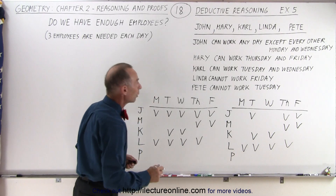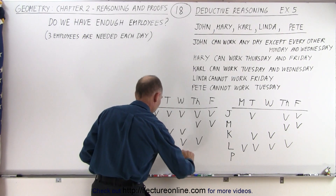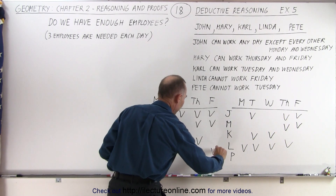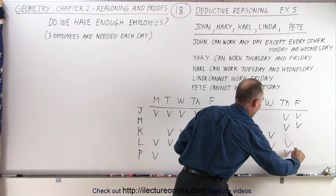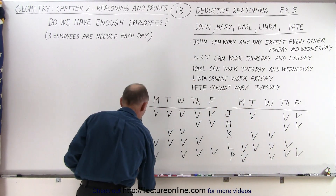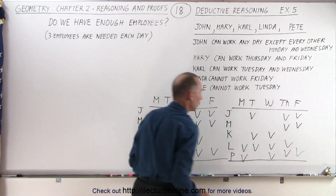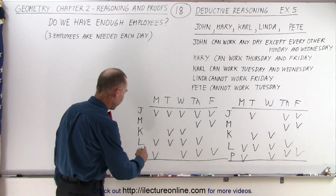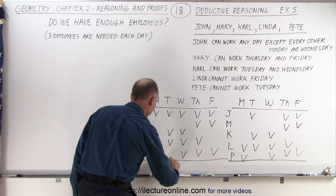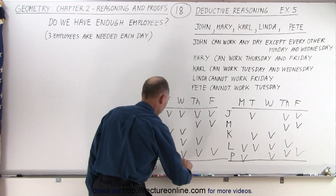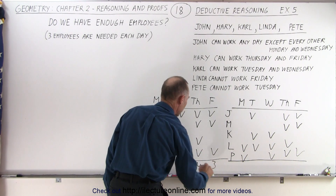Finally, Pete cannot work on Tuesday, so the other four days he can: Monday, Wednesday, Thursday, and Friday. Now let's add up how many employees we'll have on each day for those two weeks. On week one we can have three employees available for Monday, three for Tuesday, four on Wednesday, four on Thursday, and three on Friday.